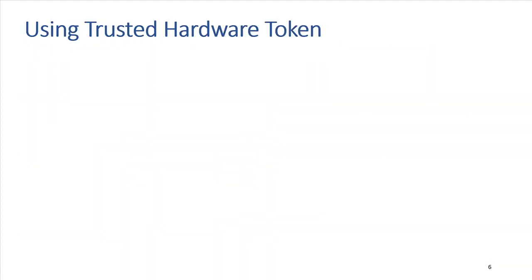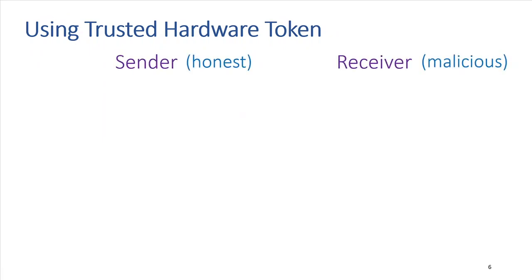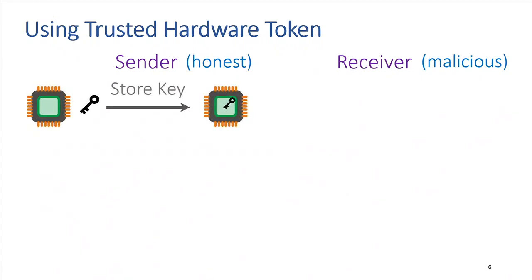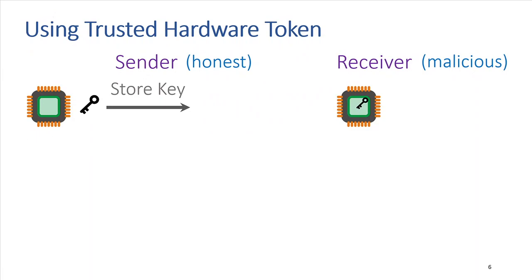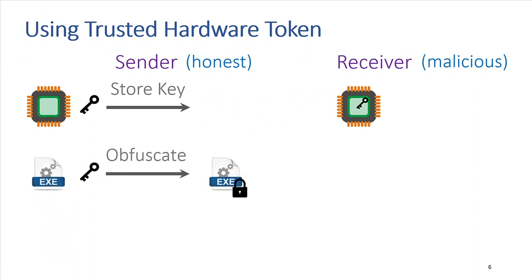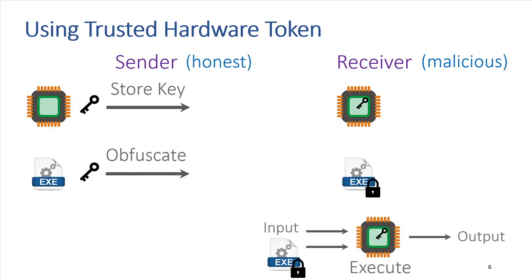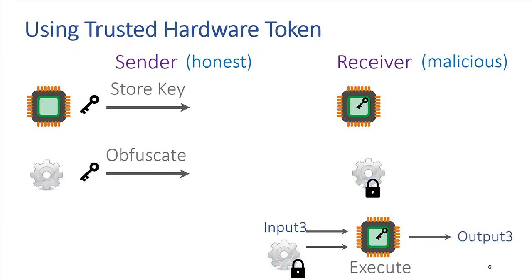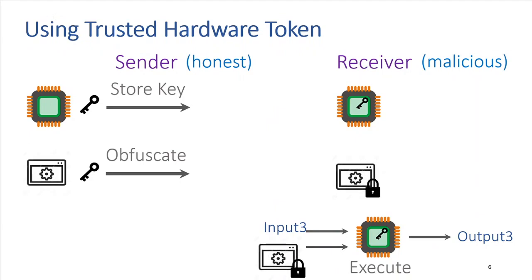Let us see how we can use a trusted hardware token to achieve obfuscation. There are two parties: the sender (honest) and the receiver (malicious). The sender stores a symmetric secret key in the trusted hardware token and sends it to the receiver. The receiver cannot see the key or tamper with the token. The sender then obfuscates the program using the same key and sends the obfuscated program to the receiver, who can execute it on any input. The token should be independent of the program being obfuscated.